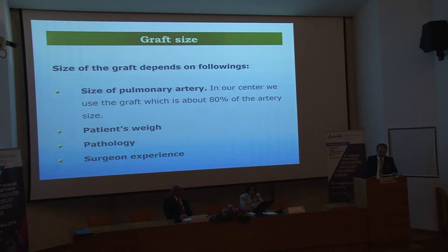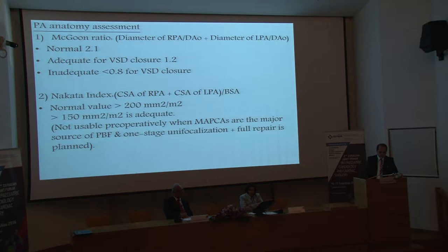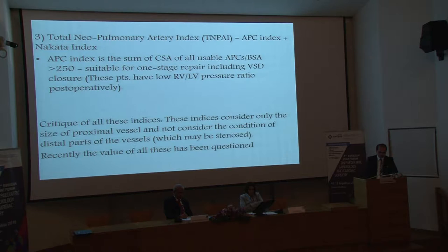There are some valuable pulmonary artery measuring parameters such as the McGoon index, Nakata index, and total neo-pulmonary artery index. However, recently the value of all of these has been questioned, because these indices consider only the size of proximal vessels and do not consider the condition of the distal part of the vessels, which may be stenosed.